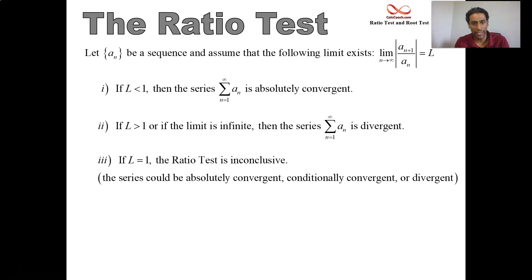Once again, there are the levels of convergence: absolutely convergence versus conditionally convergent versus just strictly divergent. We'll get to those levels of convergence later. But just know that if it's equal to 1, you have to try another test.